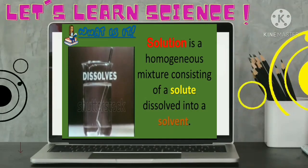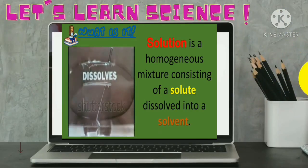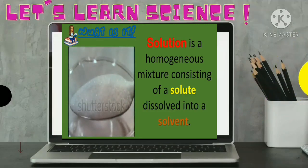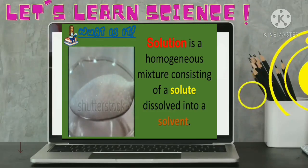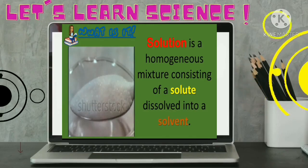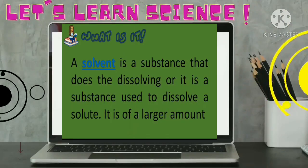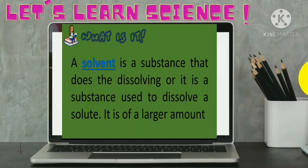Solution, based on the description, has two substances that are mixed together. They are solute and solvent. A solvent is a substance that does the dissolving, or it is a substance used to dissolve a solute. It is of a larger amount.